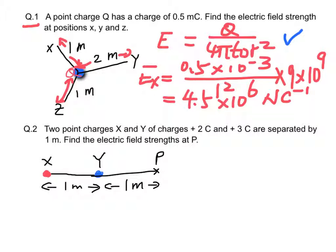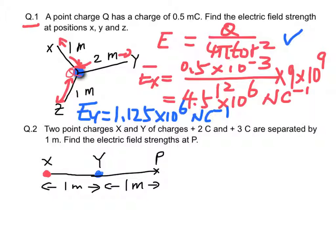And E at z is similarly calculated, giving 0.5 times 10 to the power 6 newton per coulomb.